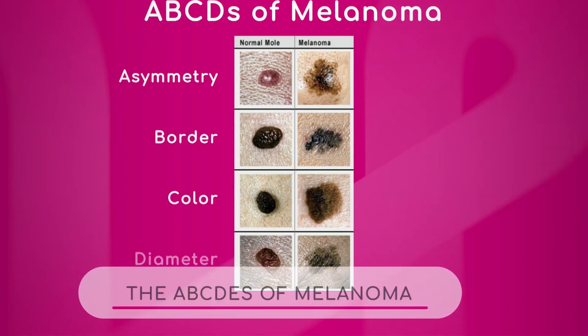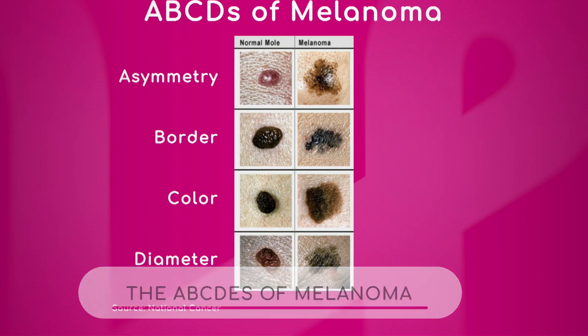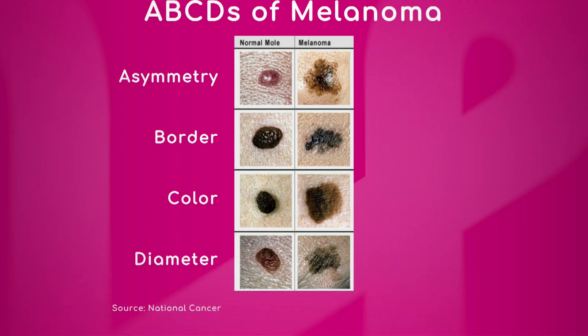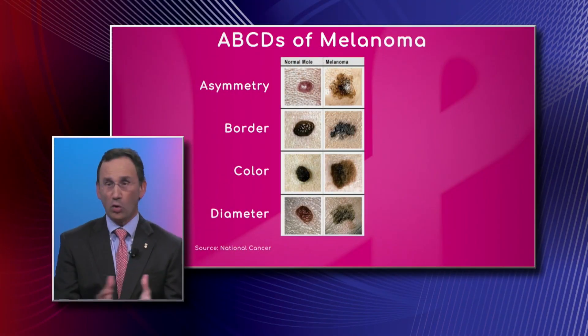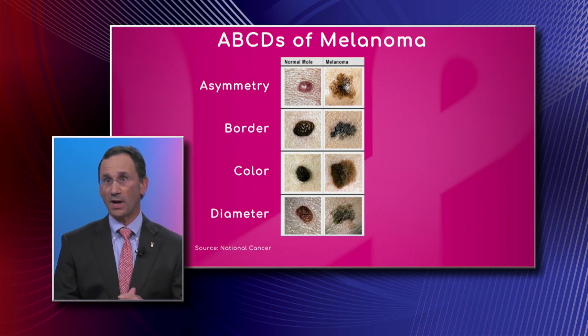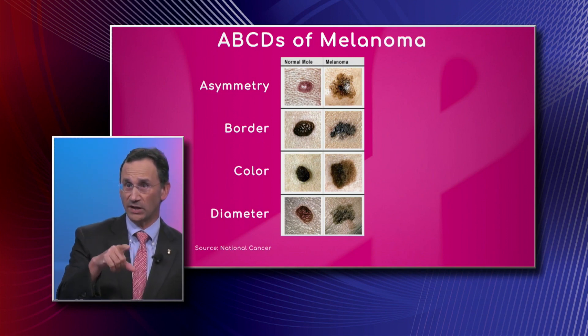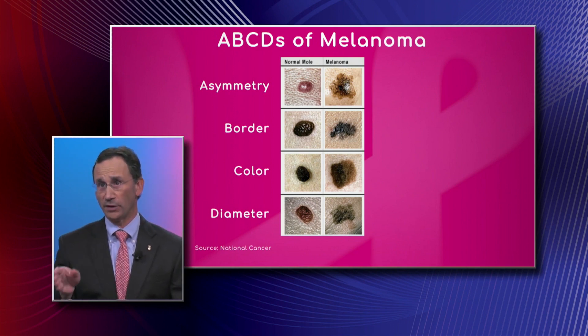We have a graphic that shows what these letters stand for. The first A is for asymmetry. This graphic is one of the highlights of the talk today. This is the way you look at yourself, because the best doctor is you. When you're looking at your moles, you should have a sense of what you're looking at. These are the ABCDEs of melanoma. Asymmetry means the shape is irregular. If you look at the pictures, the left column shows normal moles and on the right side there are melanomas.